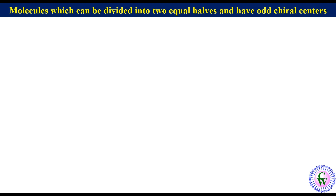Now, coming to molecules which can be divided into 2 equal halves and have an odd number of chiral centers. Pentane-2,3,4-triol is one example of this type. It has 3 chiral centers, so n is equal to 3. It can be divided into 2 equal halves as it has a plane of symmetry.